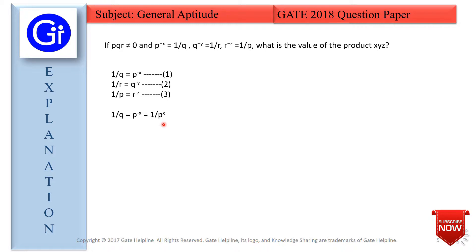We now replace 1 upon P using the third equation — substituting R raised to the power minus Z in place of 1 upon P. Since X is also in the denominator, it becomes R raised to the power minus XZ.